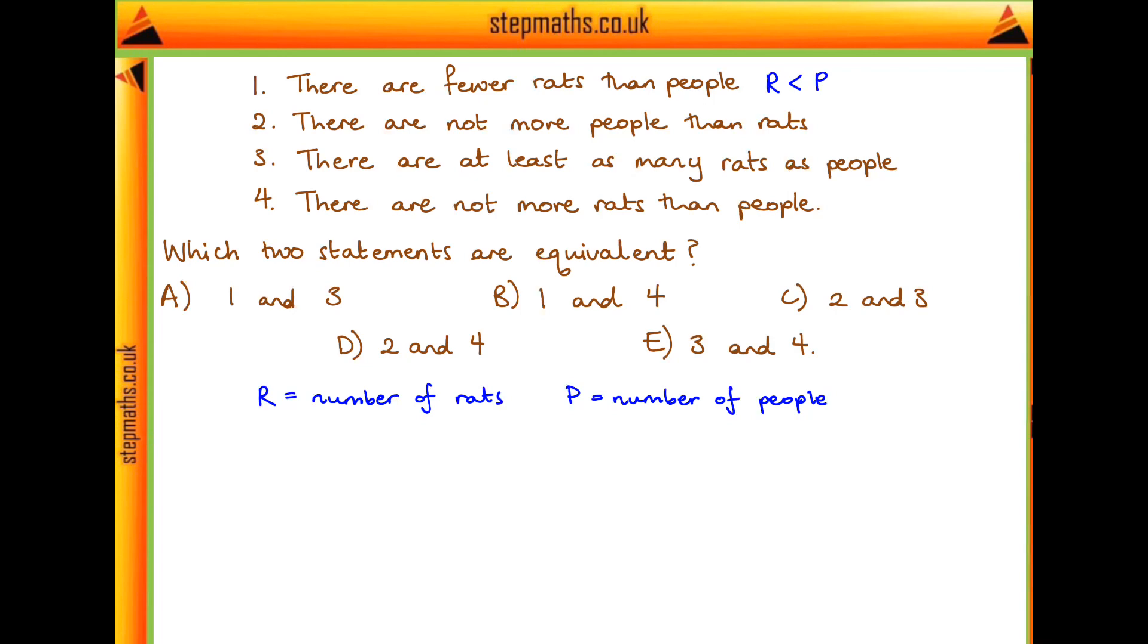Now what about statement two? There are not more people than rats. So we could have fewer people than rats, or we could have the same number of people as rats, so long as there aren't more people than rats.